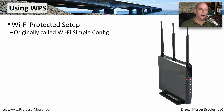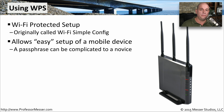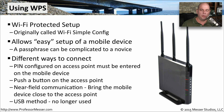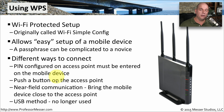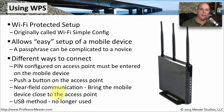There's another way to authenticate to a wireless access point called WPS — Wi-Fi Protected Setup, originally called Wi-Fi Simple Config. The idea was to provide an easy way for devices to securely authenticate to an access point at home. You could connect using a PIN configured on the access point and entered on your mobile device, a push button on the access point, near-field communication where proximity grants access, or even a USB method where USB information from your machine could be plugged into the access point for recognition.